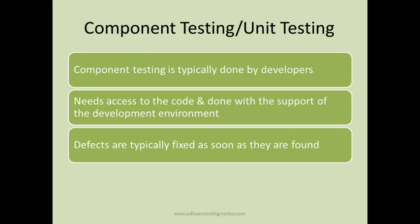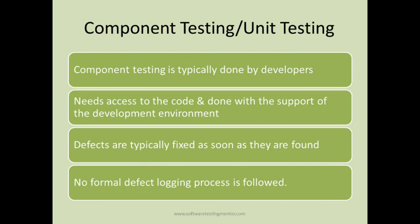Defects are typically fixed as soon as they are found in component testing. As soon as developers find any defect in a unit, they fix it then and there. There is no formal defect logging process in unit testing — developers write and execute test cases, fix defects immediately, and no defect logging process is followed.